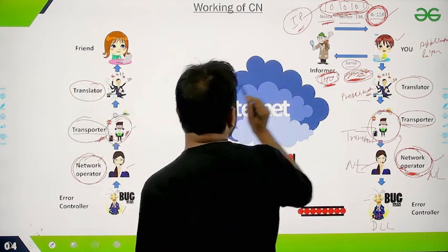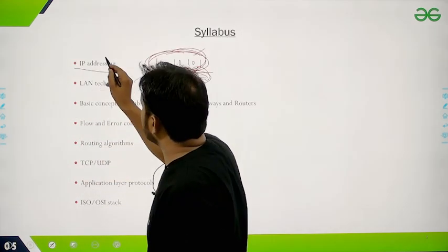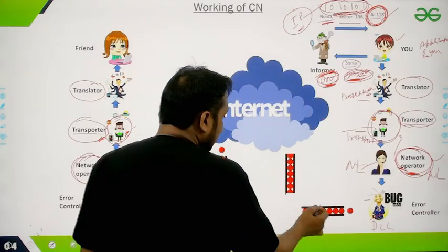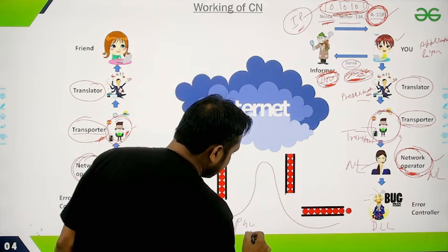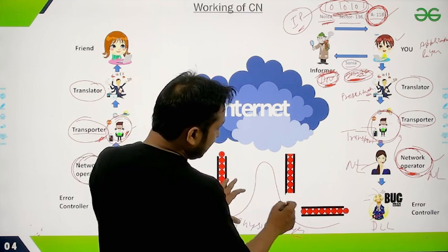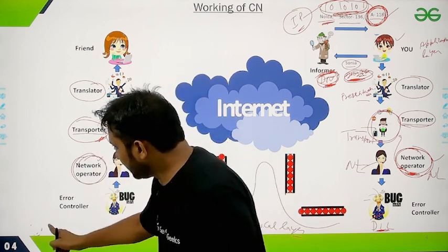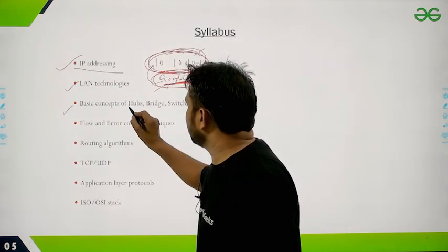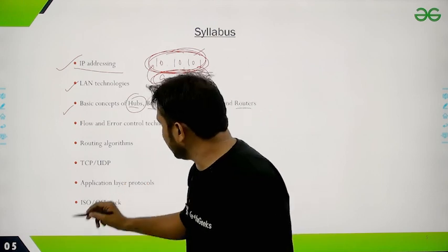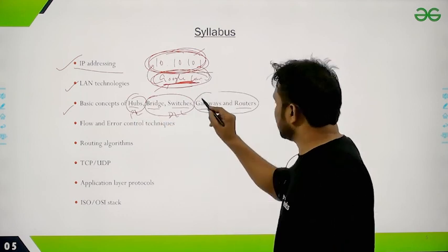After IP addressing, we will discuss LAN technologies. LAN — Local Area Network — works at the physical layer, with the data link layer also helping to manage it. We will then cover networking devices: hub, switches, bridge, gateway, and routers. Hub works at the physical layer. Bridges and switches work at the data link layer. Routers work at the network layer.